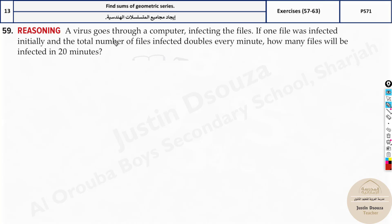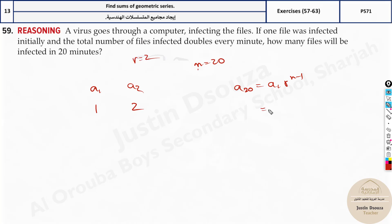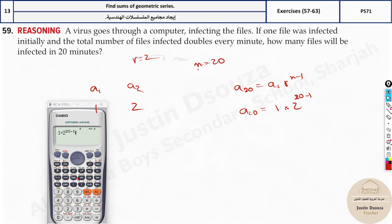One file is infected initially so a1 equals 1. It doubles every minute so r equals 2. n equals 20. Using the formula: a20 equals 1 times 2 to the power 20 minus 1, which is 2 to the power 19. Substituting into the calculator gives 524,288 — nearly half a million files infected.